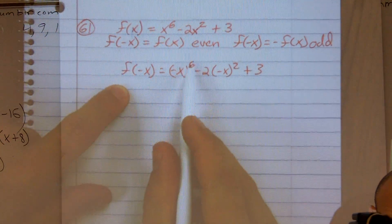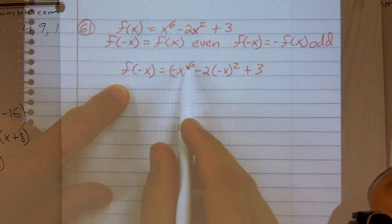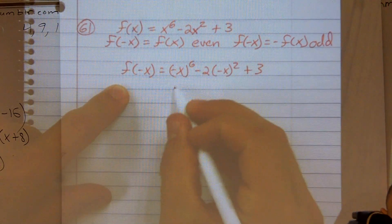Negative x to the 6th power. Negative x to the 6th power. Anything raised to an even power is going to be positive, right? So that becomes x to the 6th.